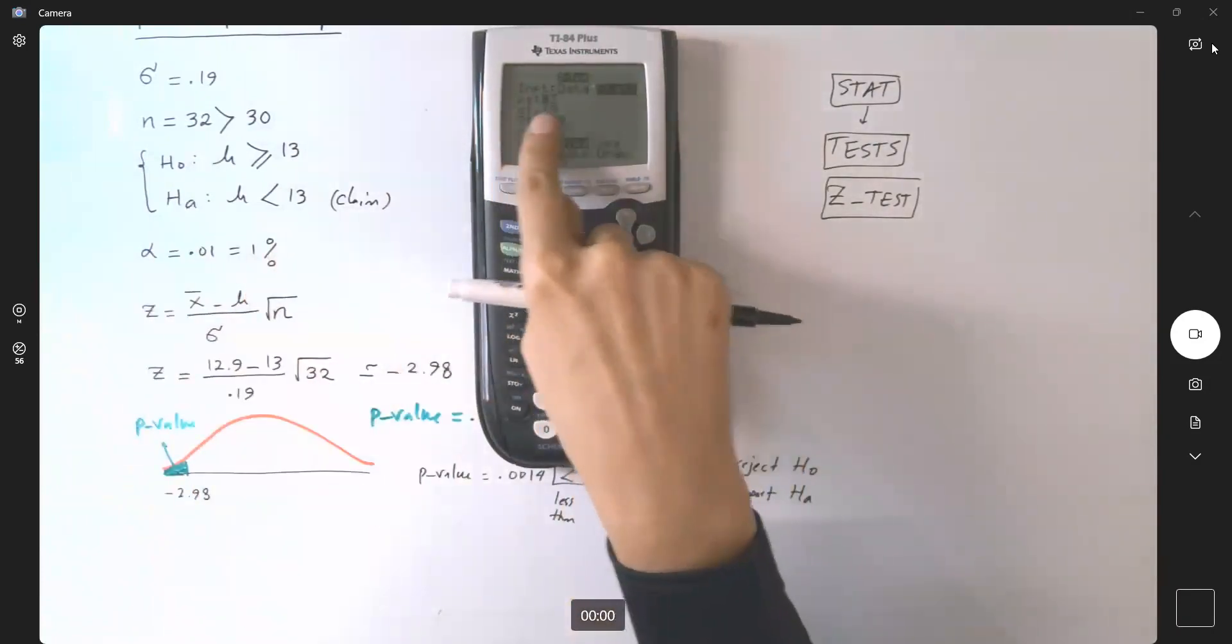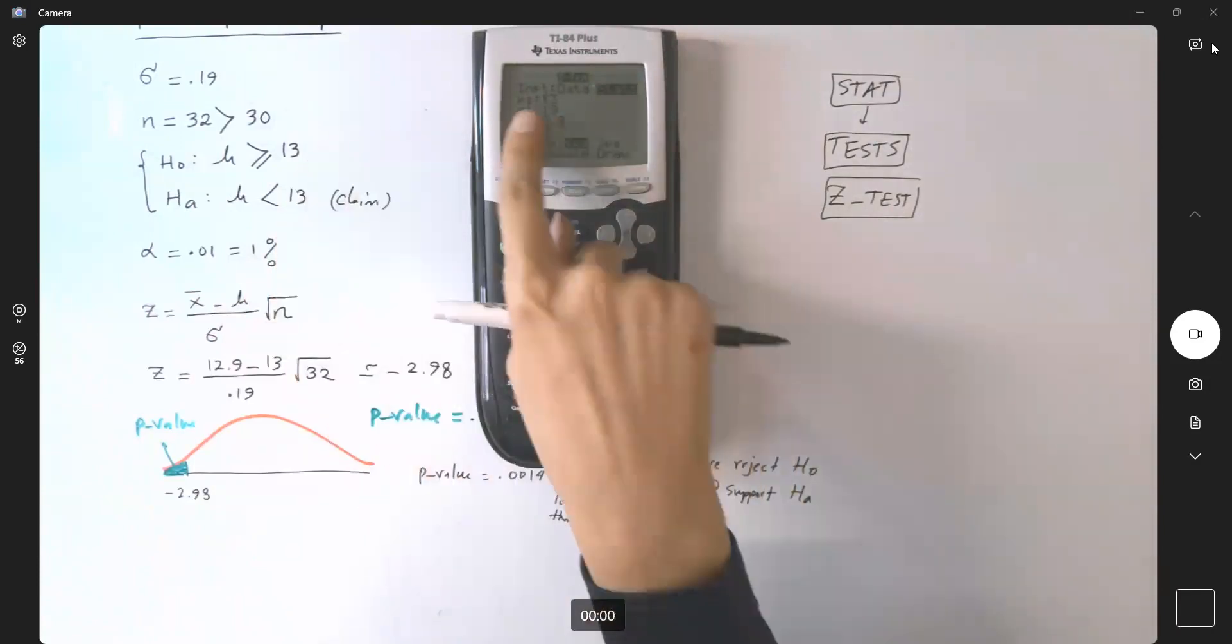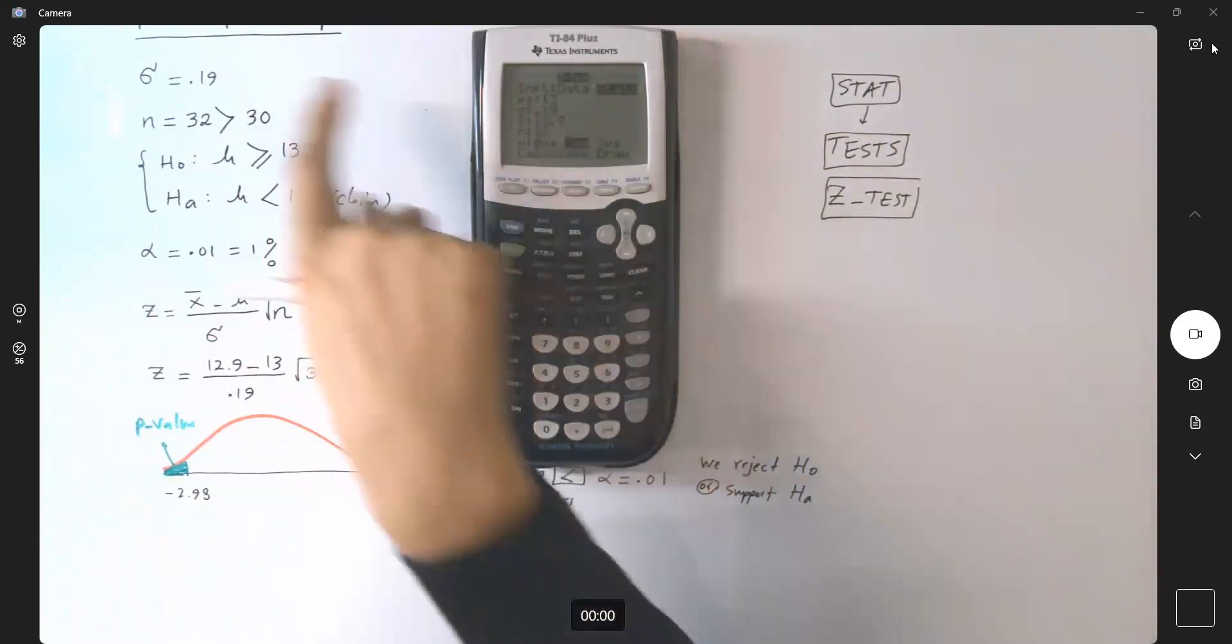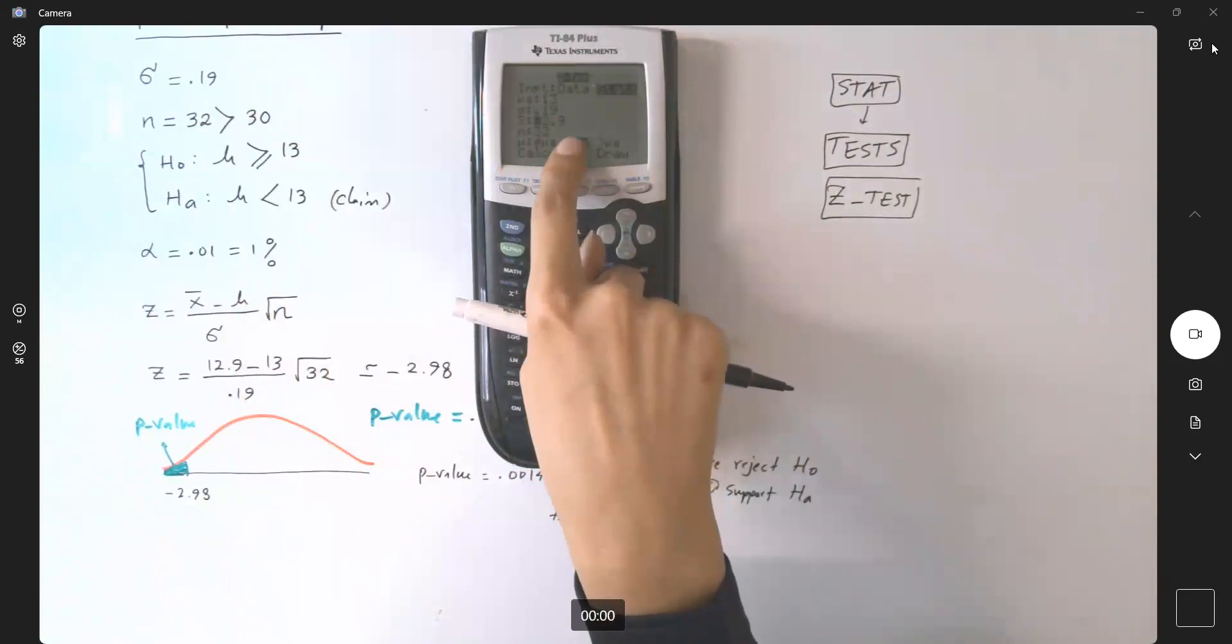What is mu 0? It is 13. What is sigma, population standard deviation? It is 0.19. What is x bar, the average of your sample? 12.9. Sample size? 32.